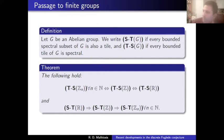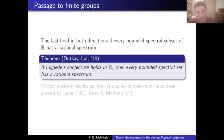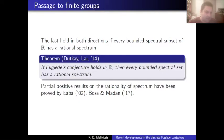Dkai and Lai proved that if Fuglede's conjecture is true, then every bounded spectral set has a rational spectrum. There are some other partial positive results by Laba and recently by Bourgain and Maldague. But this is not the focus of this talk. I will mention briefly what happens in non-cyclic groups. I have worked mostly on cyclic groups, which is what I'll present later on.